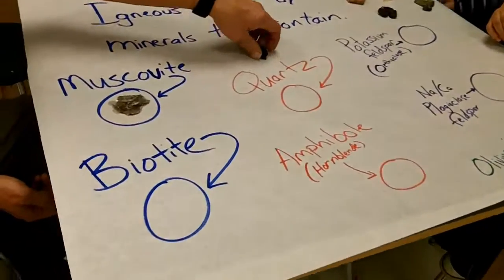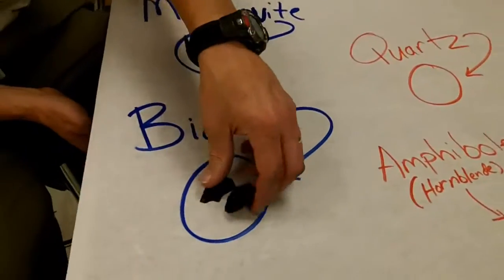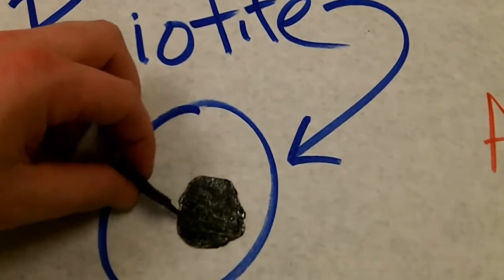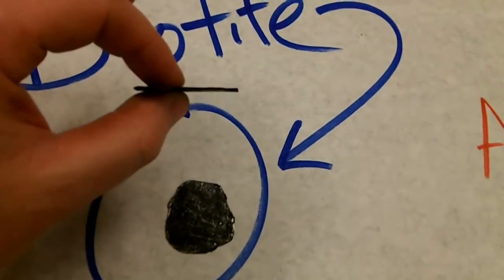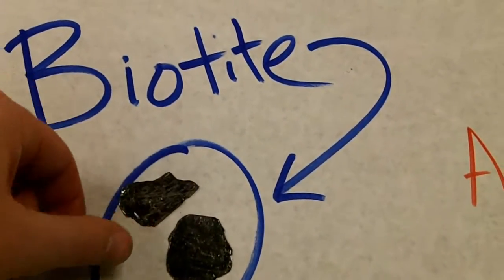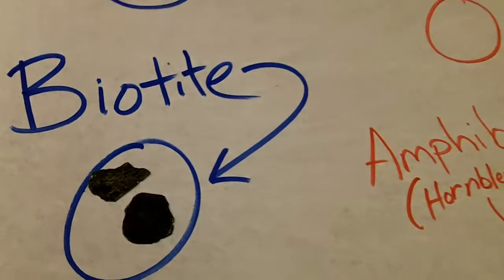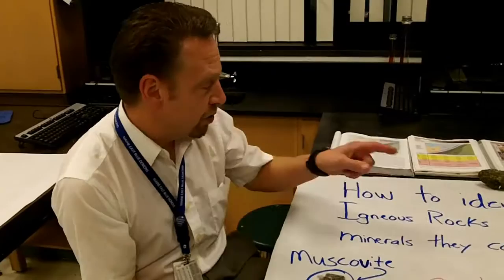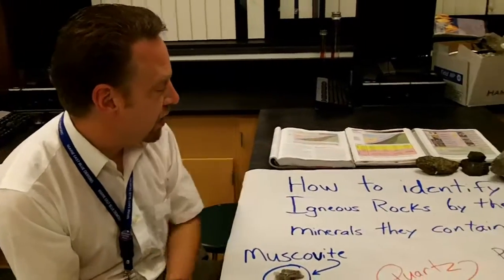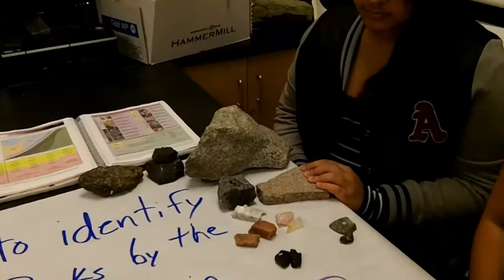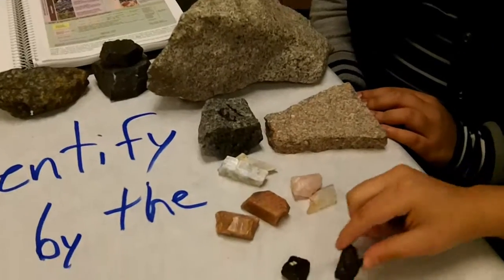So we've got muscovite mica and biotite mica. They've got the same last name, but based on different characteristics they have. Now these minerals show up oftentimes in our igneous rocks. Take a look at those igneous rocks and see if you can find one that you think might have some black spots in it, like the biotite.